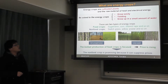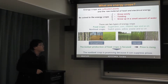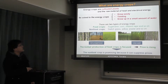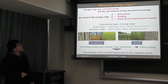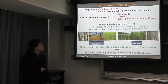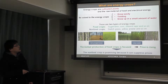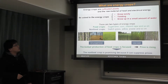There are two types of energy crops. One is food crops, such as sugar corn, corn, oil, and rapeseed corn. The other is non-food crops, such as switchgrass, miscanthus, rapeseed, and so on.